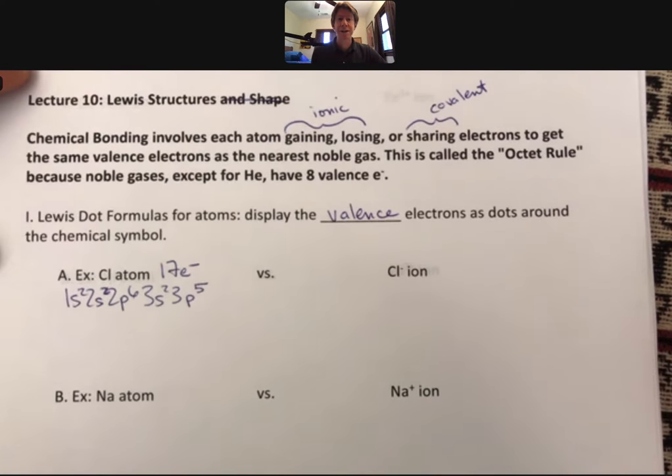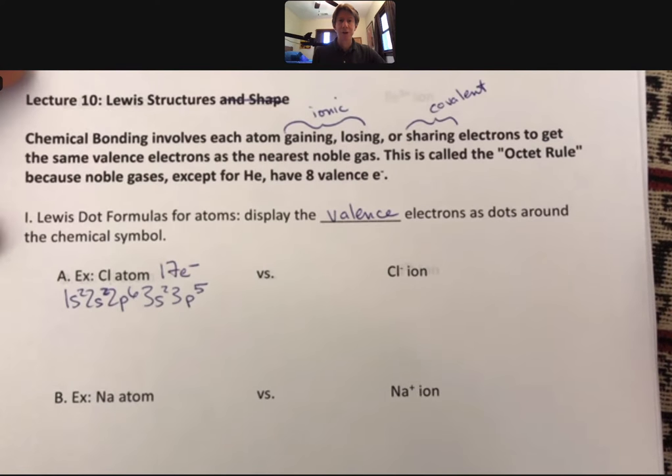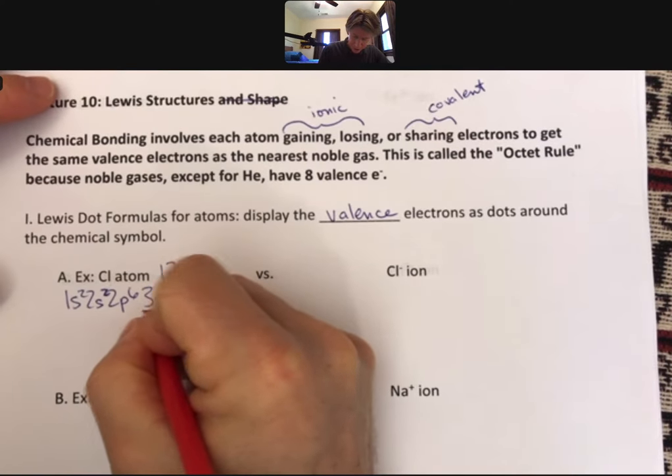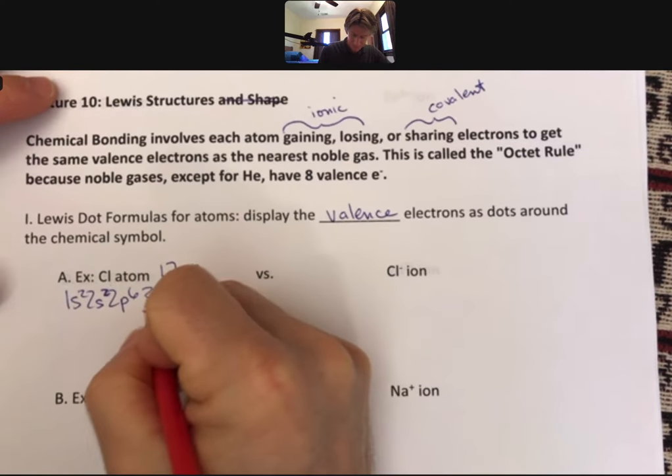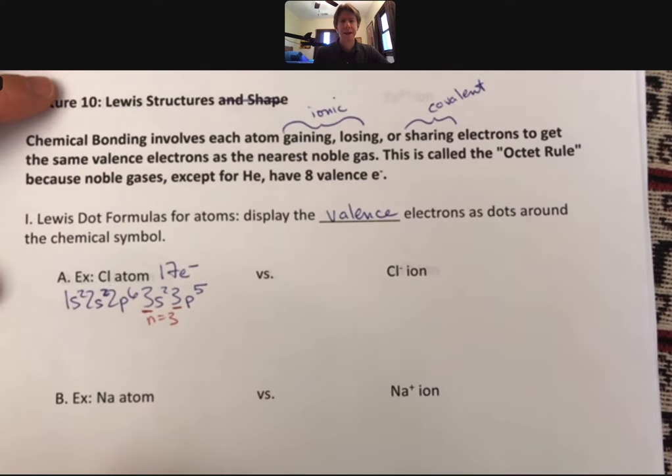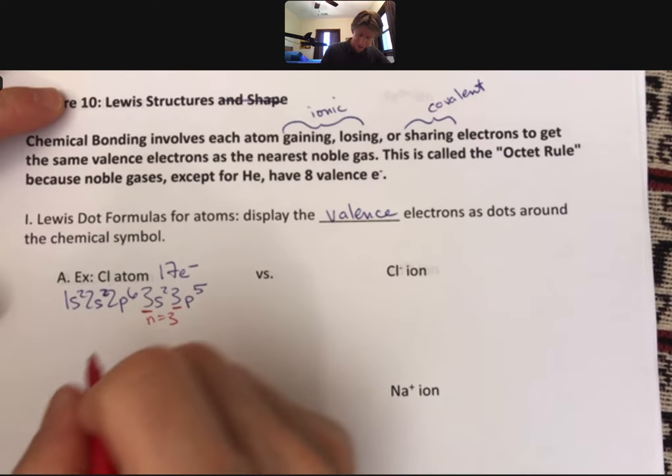We've said that the valence electrons are all of the s and p electrons for the highest principal energy level. The highest principal energy level here is n equals 3. Within n equals 3, there are 7 electrons. So that means there are 7 valence electrons.